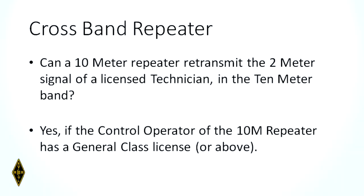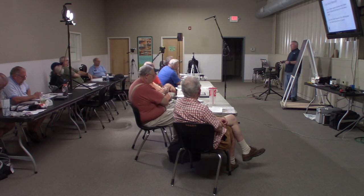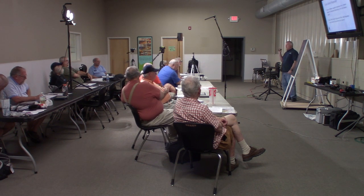A lot of radios will do cross-band repeating — that's another kind of repeater. Here's a special case: somebody's put up a 10-meter band repeater with an input on 2 meters. Can a technician operator go into that 2-meter input and come out on 10 meters? The answer is yes, if the 10-meter repeater's control operator has a general class license. Does that control operator have to be right next to the repeater? No, because repeaters can be operated under automatic control. A repeater always has a control operator — they just don't have to be on site. So if the control operator of the 10-meter repeater has a general class or above license, a technician can work through it if they're only transmitting on 2 meters.